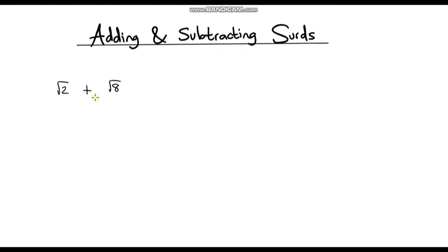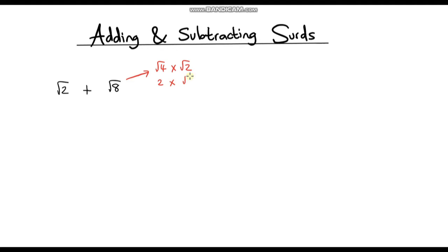What we have to do is simplify the surds first. Root 2 is already simplified, but root 8 we can simplify. If you're unsure of simplifying surds, I encourage you to go back and watch my previous video on this topic — I will leave a link in the top corner. So root 8 is the same as root 4 times root 2, and the square root of 4 is 2, so this is just 2 root 2.